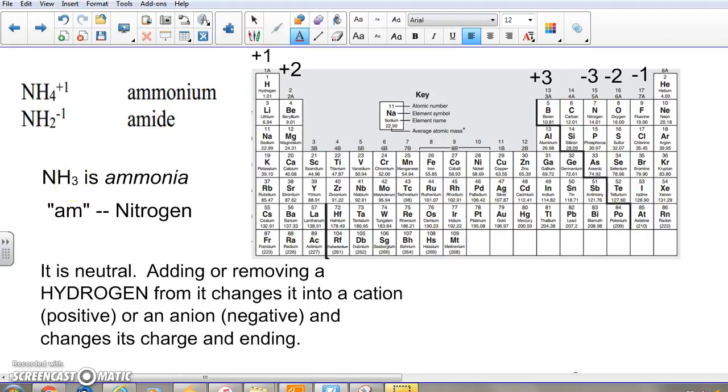Here we have ammonia. Notice that if we add an H to it, instead of NH3, we have NH4, and it becomes a positive charge because we've added a hydrogen to it.